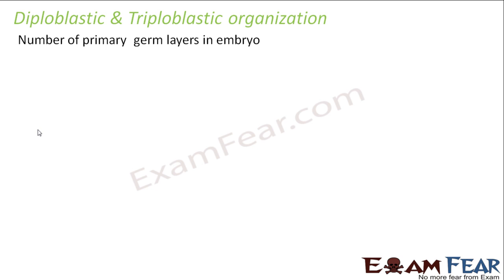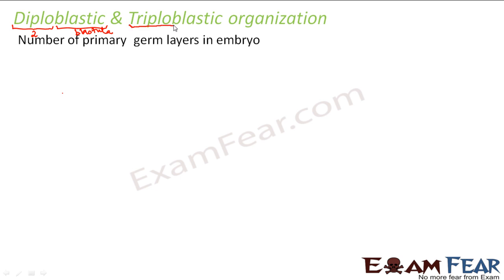So the number of primary germ layers in the embryo — let us first try to understand the origin of the terms diploblastic and triploblastic. Wherever you have the prefix 'diplo' or 'di', that means two. 'Blastic' is a term derived from blastula. Similarly, 'triplo' would mean three, and blastic is again derived from blastula. Now the question is: what is blastula?